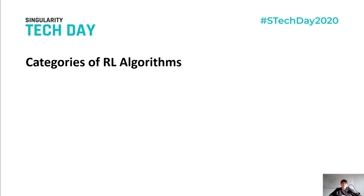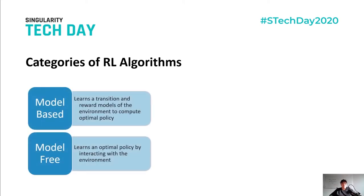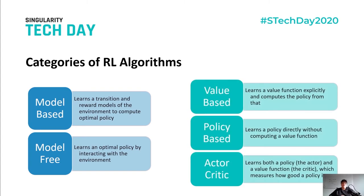We need to distinguish between different categories of reinforcement learning algorithms. The distinction is between model-based and model-free algorithms, and also whether they are value-based, policy-based, or actor-critic. Model-based algorithms learn from the transition and reward models of the environment to compute the optimal policy — they already have a reward function and a transition function to find the best action for the optimized reward.